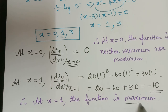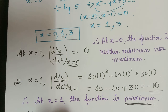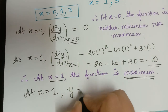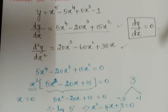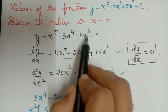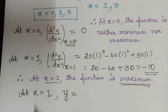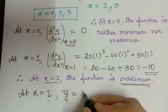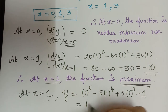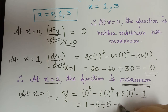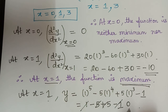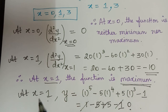To find the maximum value, we substitute x = 1 into y = x⁵ - 5x⁴ + 5x³ - 1. This gives 1 - 5 + 5 - 1 = 0. Therefore the maximum value is y = 0 at x = 1.